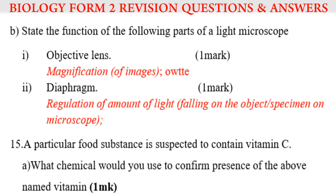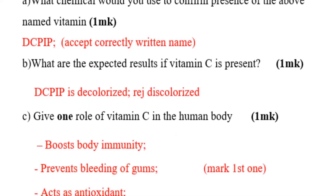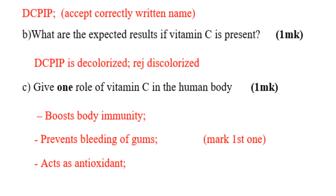Question number 15: a particular food substance is suspected to contain vitamin C. Which chemical would you use to confirm the presence of the above named vitamin? The chemical used is DCPIP — that is the chemical used to test for vitamin C.